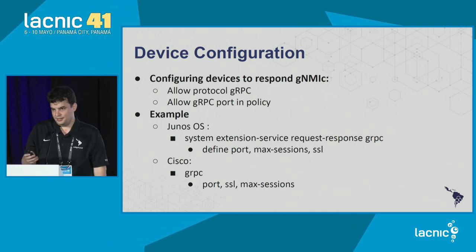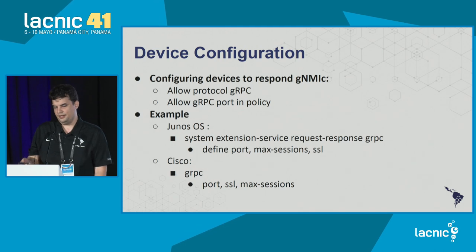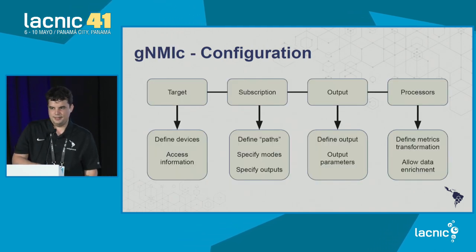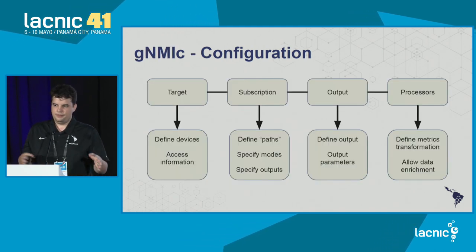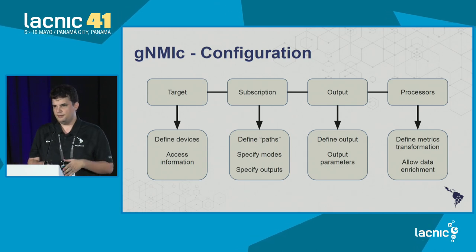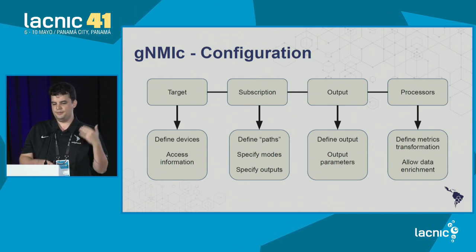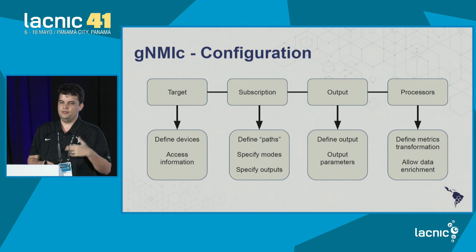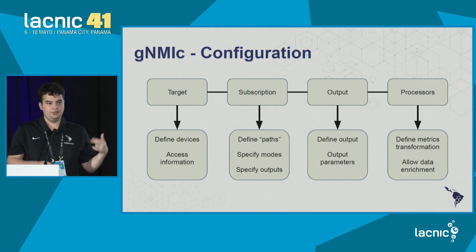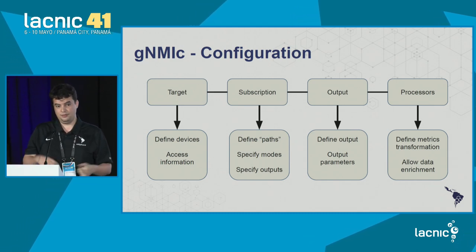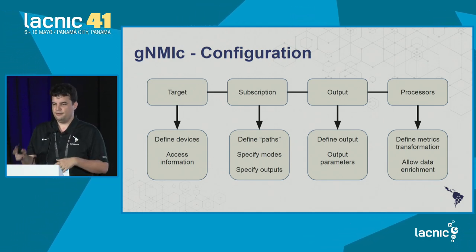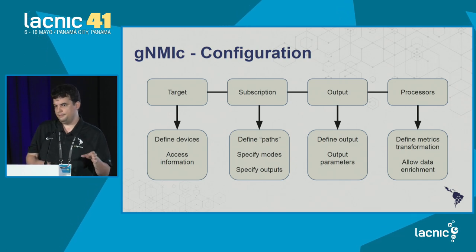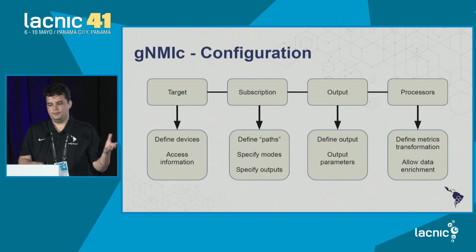The next step is to configure GNMIC. We can break GNMIC down into four parts. The first part is specifying the target — we set the devices, the device information, the port, username, and everything related to accessing the device, meaning the access information.